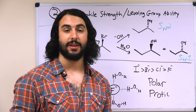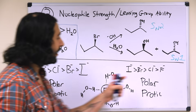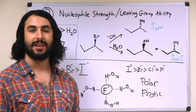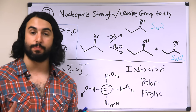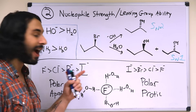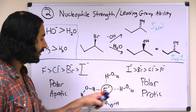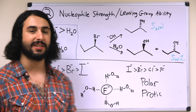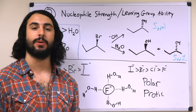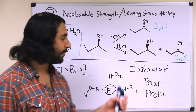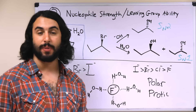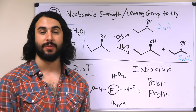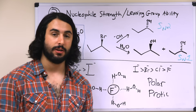In a polar protic solvent, this trend reverses. Because fluoride is much more basic, it's going to spend the most time interacting with available protons — for example, the protons on a water molecule via ion-dipole interactions. Because the fluoride ion is spending much more time interacting with solvent molecules, that hinders its ability to act as a nucleophile. In this case, iodide is going to be the best nucleophile because its charge is more spread out, more diffuse, and more polarizable, so it spends less time participating in interactions with the solvent.